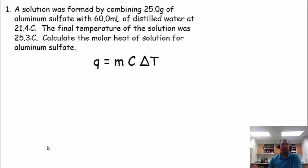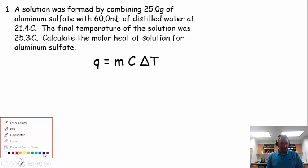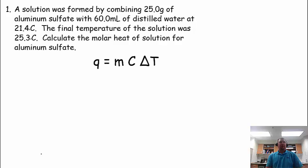A solution was formed by combining 25.0 grams of aluminum sulfate with 60 milliliters of distilled water at 21.4 degrees Celsius. The final temperature of the solution was 25.3 degrees Celsius. Calculate the molar heat of solution for aluminum sulfate. We've got lots of stuff going on here, so let's try our best to work our way through it. A couple things you're going to need, and this comes from earlier in your chemistry year.